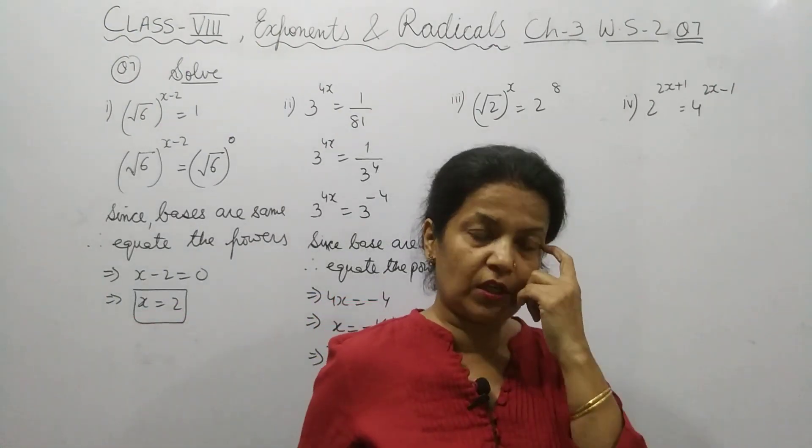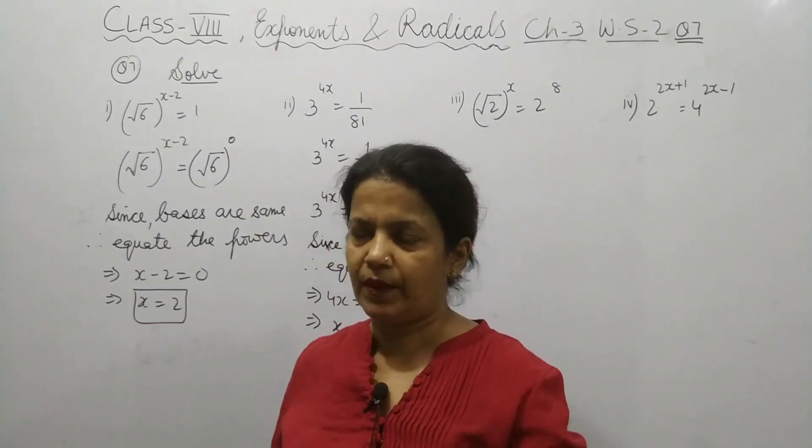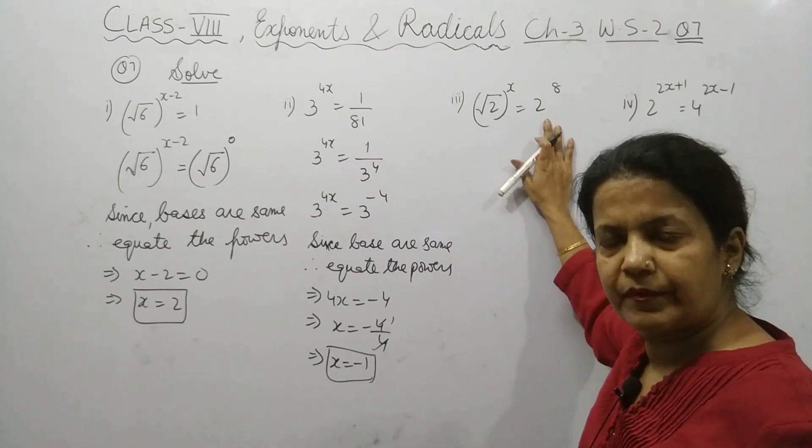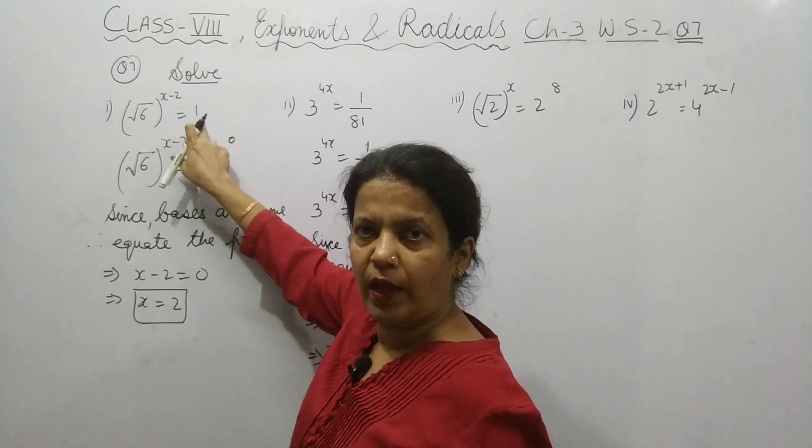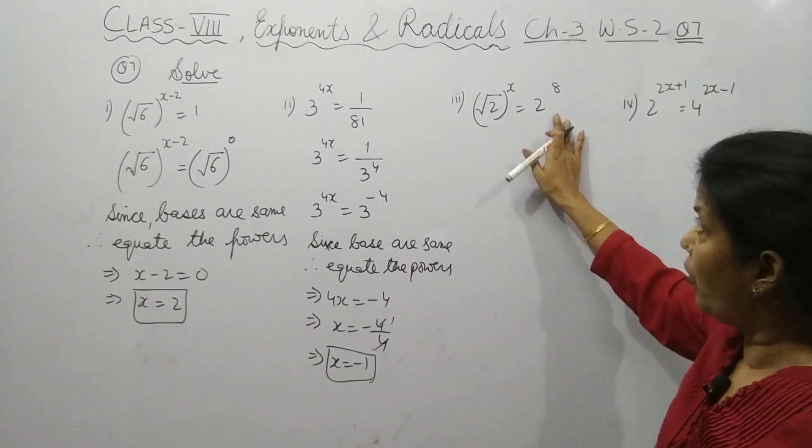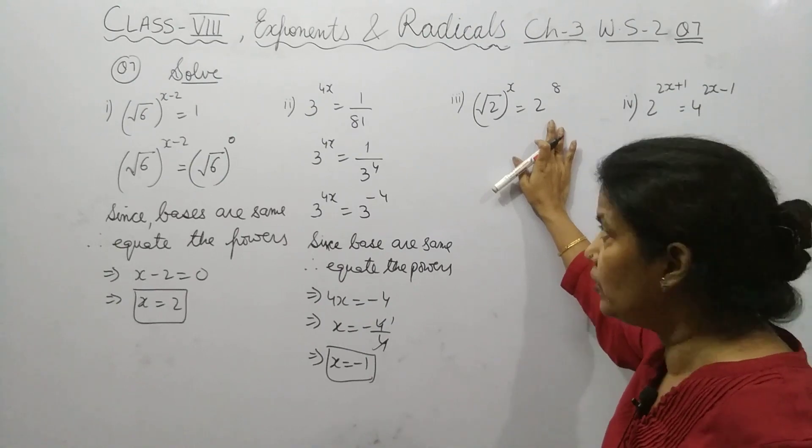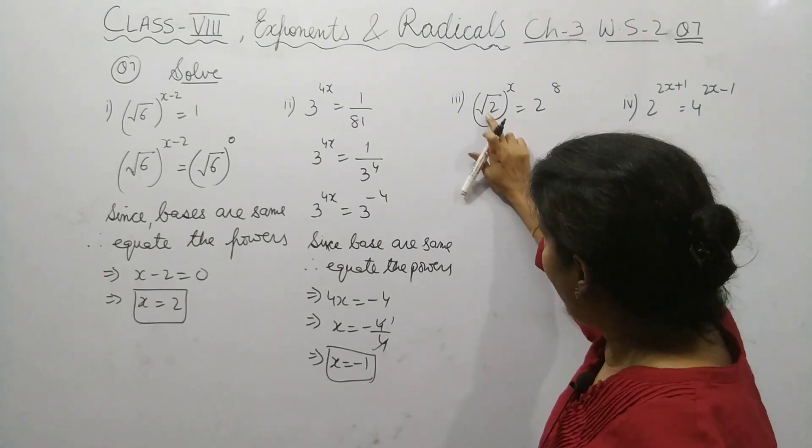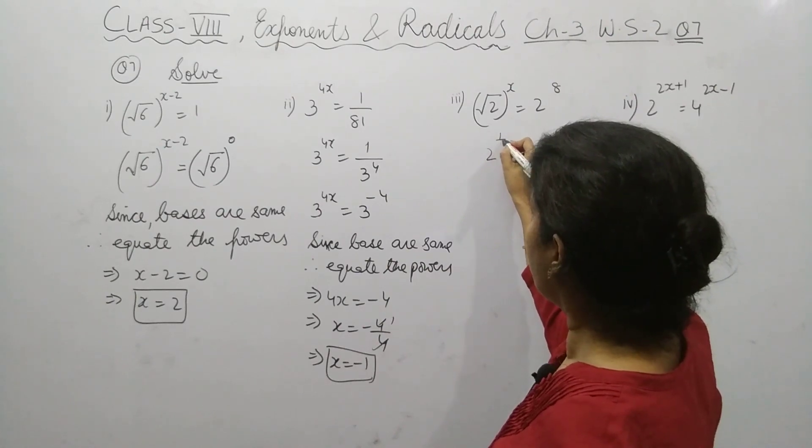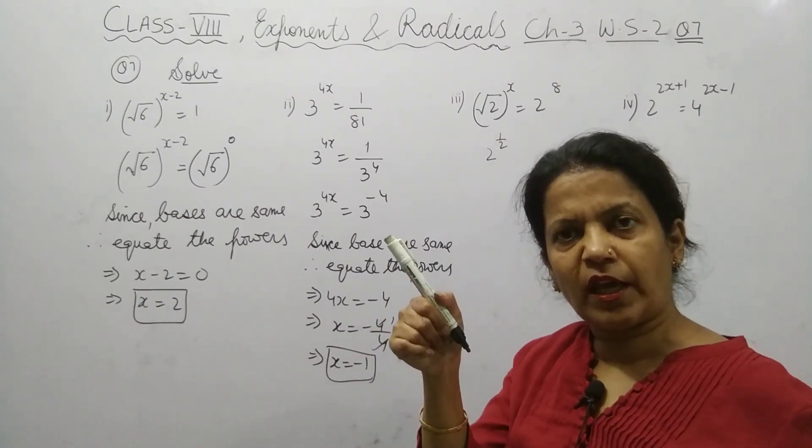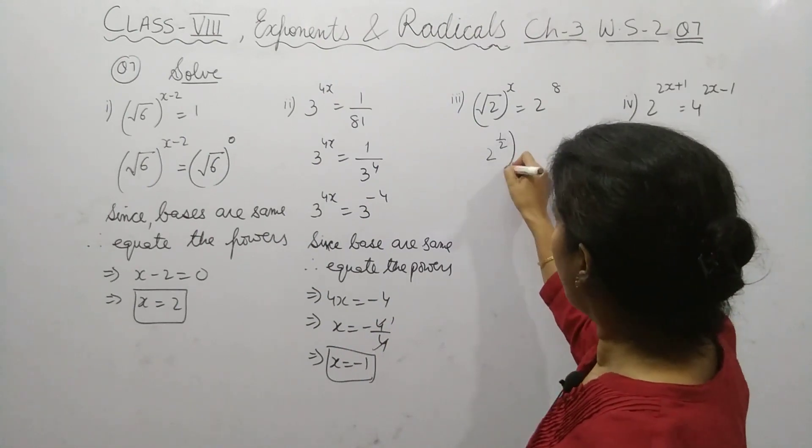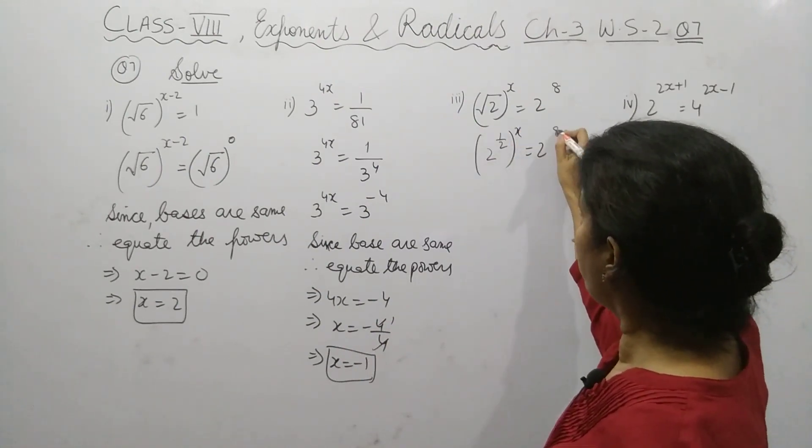Basically in these questions, you have to make the base same. Third part: Can we remove this root sign from here? Yes we can remove by writing it 1 by 2. Square root sign, so instead of writing in the form of square root, write in power as 1 by 2. And outside is x. 2 power 8.